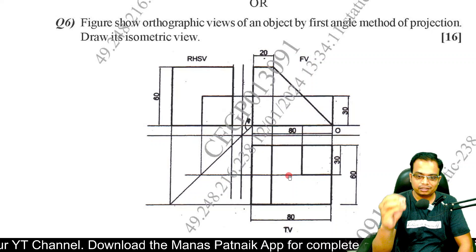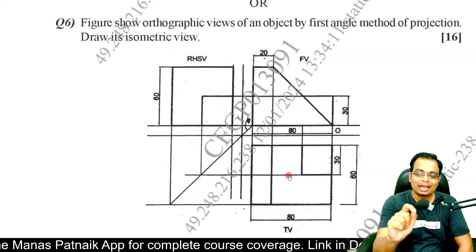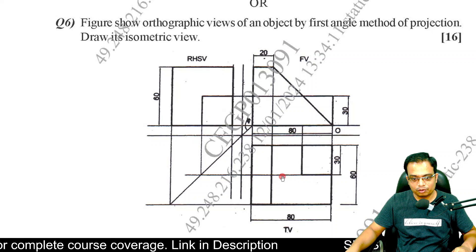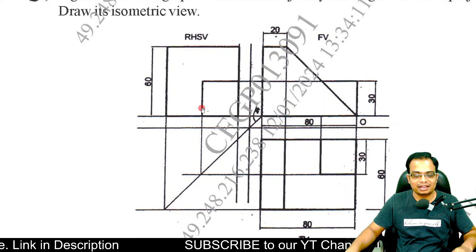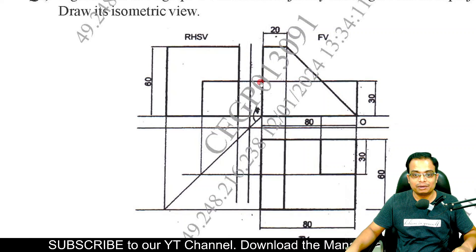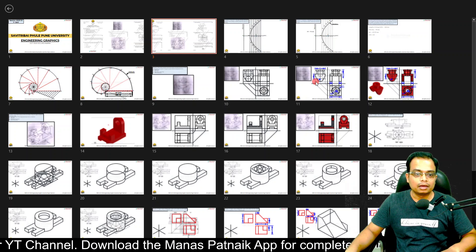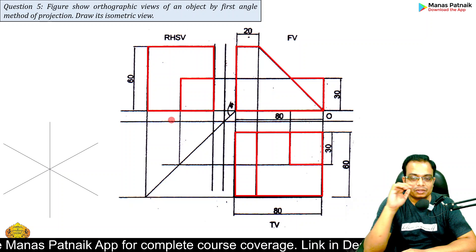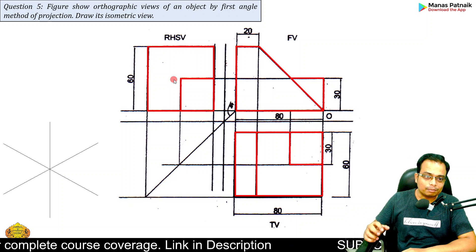Whoever has made this question paper has certainly failed to recognize the difference between an outline or a solid line and a projector line. If you extend this, it should be referred to as a projector line, and then we are rotating it at a 90-degree angle — this also refers to a projector line, but it has been drawn darker, looking like a solid line, giving an impression that there is an edge. I have made all the necessary corrections — the original diagram has outlines and edges visible in the front, top, and right-hand side views.